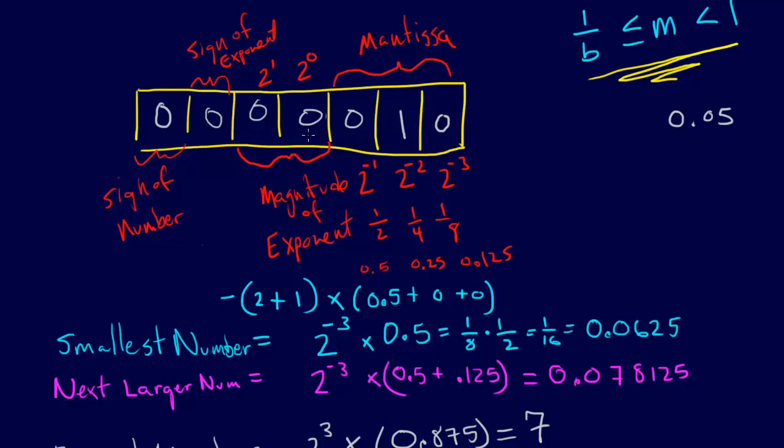That increases the magnitude of the mantissa by 1, and then at the same time, we decrease the magnitude of the exponent, so we bump down the magnitude of the exponent. In order to do that here, then we're going to need to make this negative. The sign of the exponent is going to be negative, and then we also need to give it, in the least significant bit here, we also need to give that a value of 1.